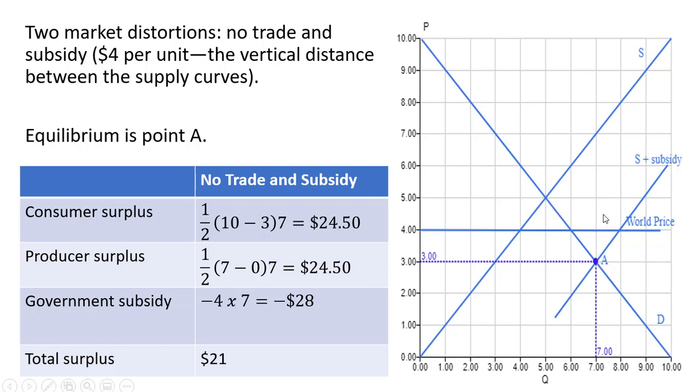So the distance between, say, point A and here, seven minus three is $4. So the equilibrium in this example, again, with no trade and the subsidy, is going to be at point A.